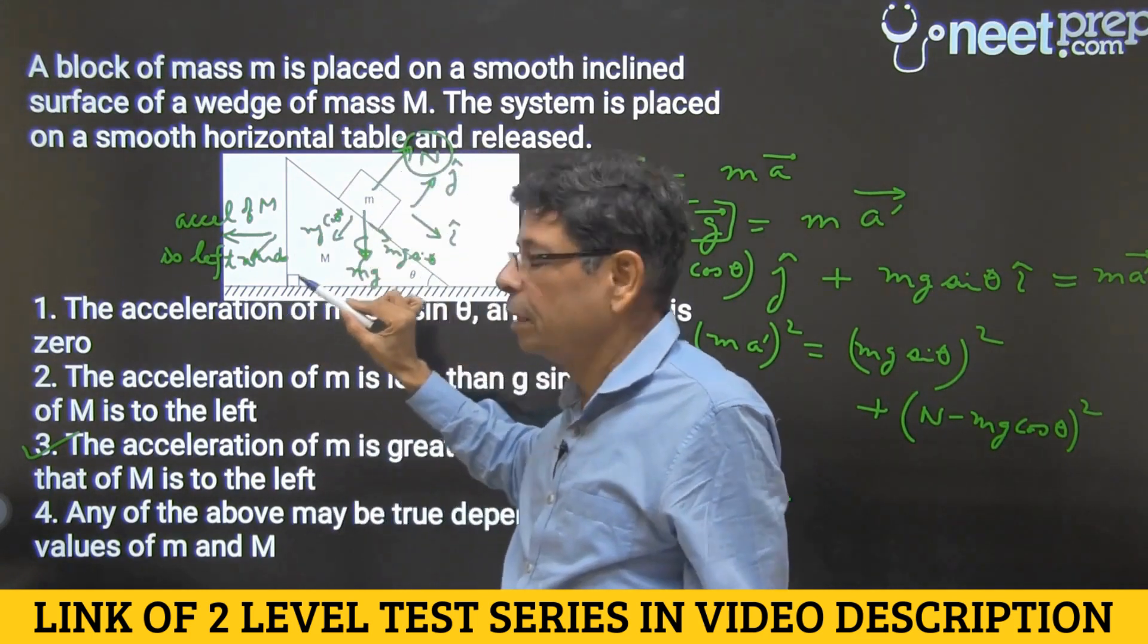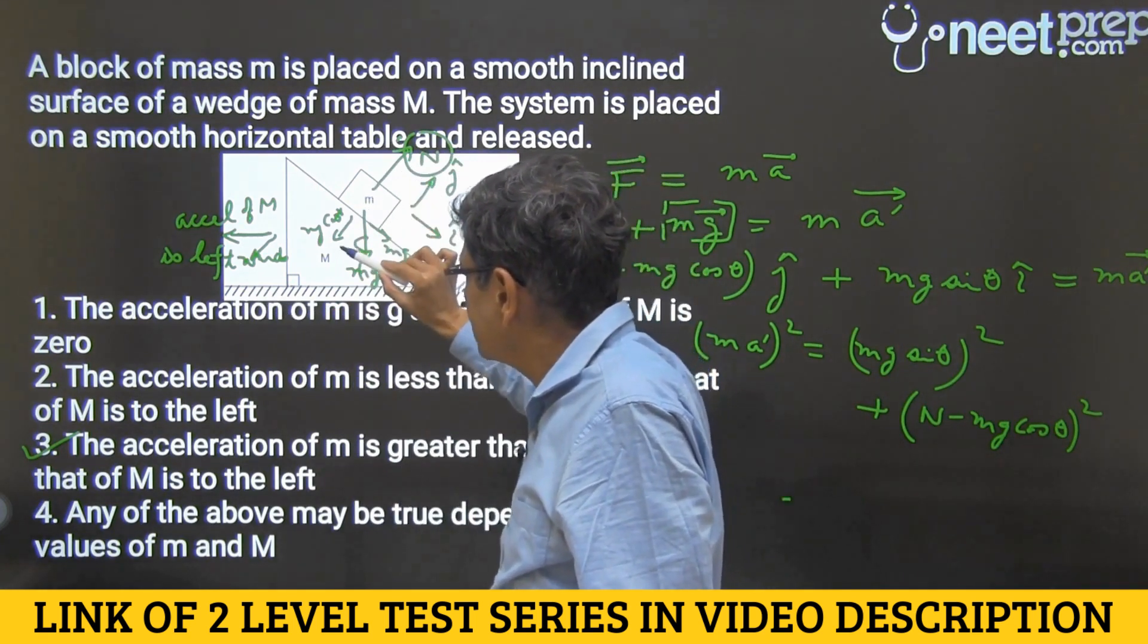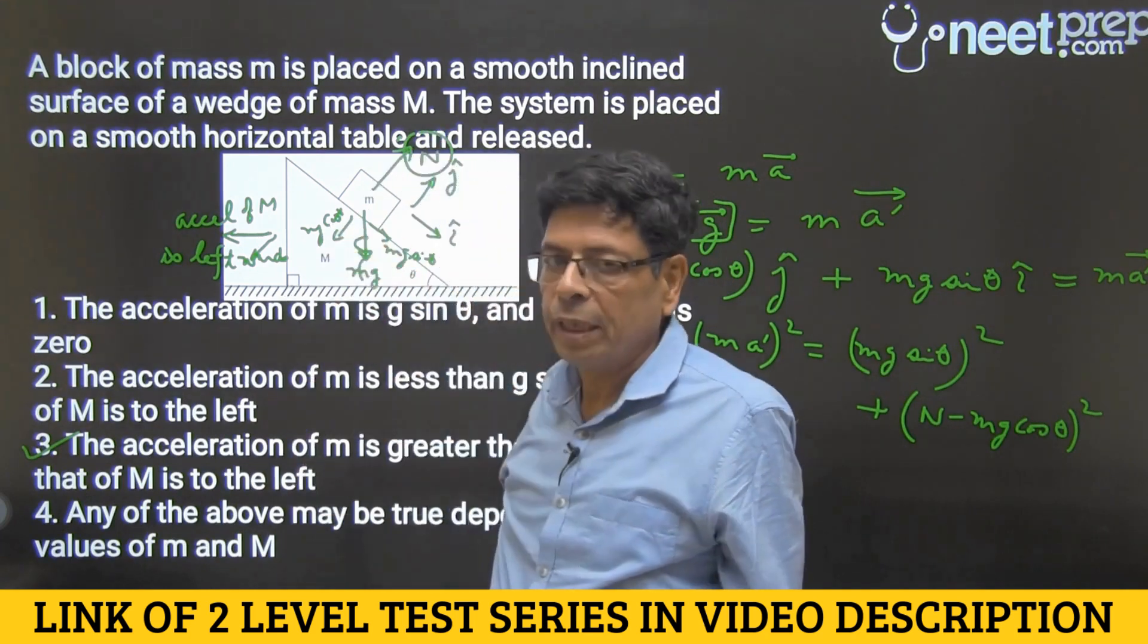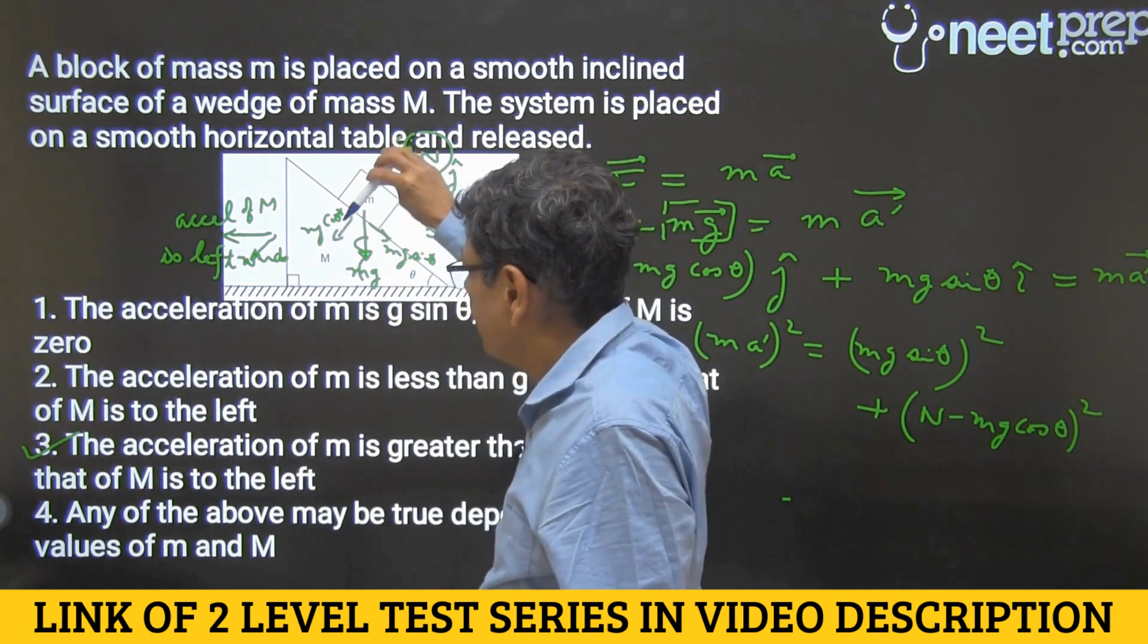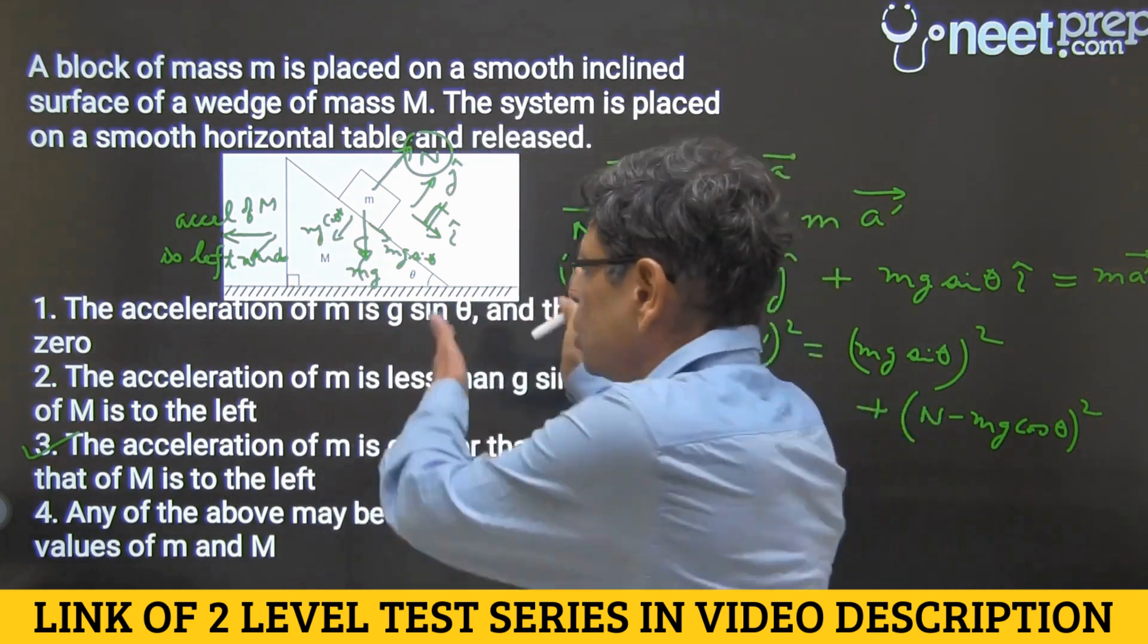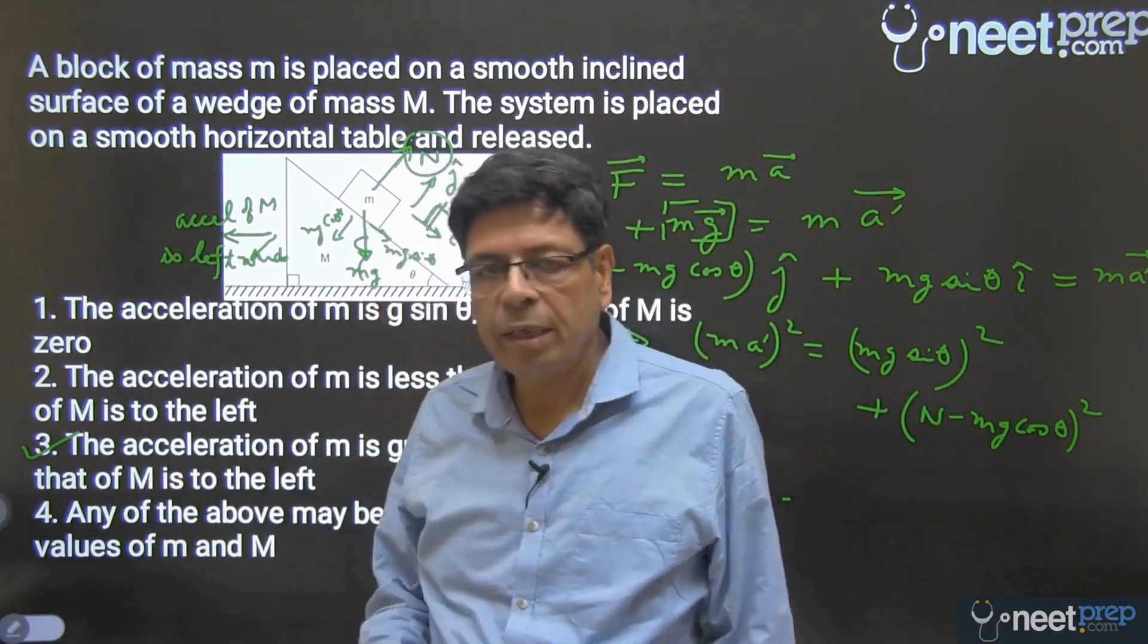This is why the block is accelerated this way, which means n is less than mg cos theta. Otherwise how would the block accelerate this way? Because if it doesn't accelerate this way, how will it keep contact with the wedge which is moving away? So that's it, option three is the answer.